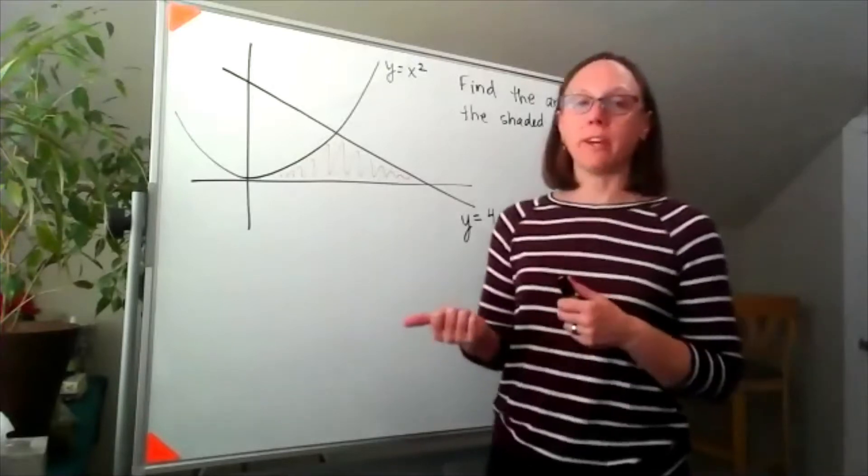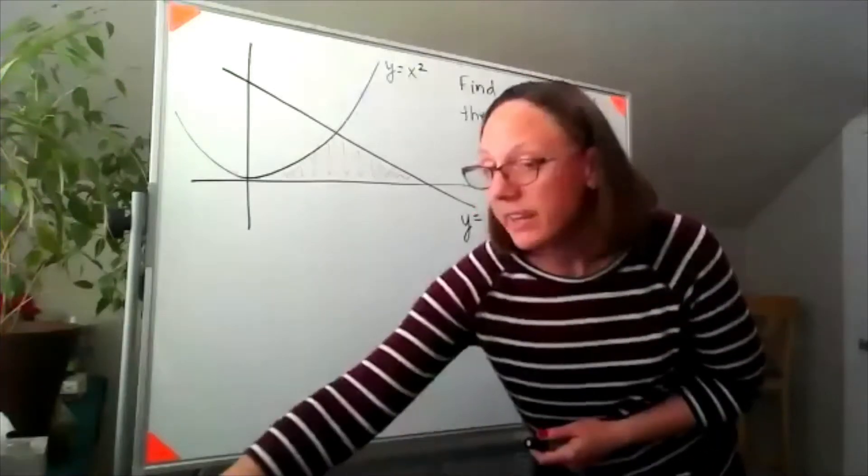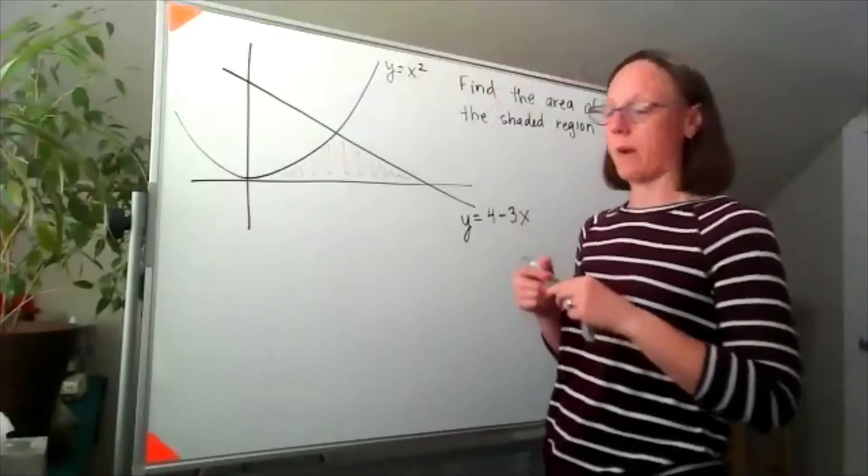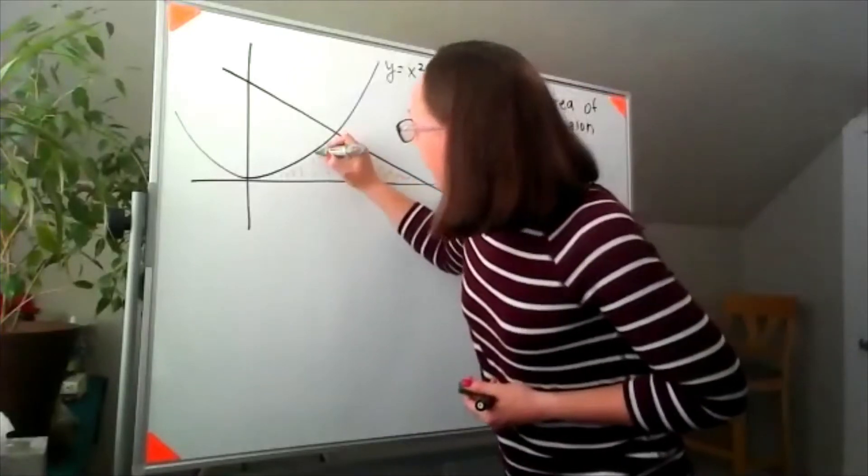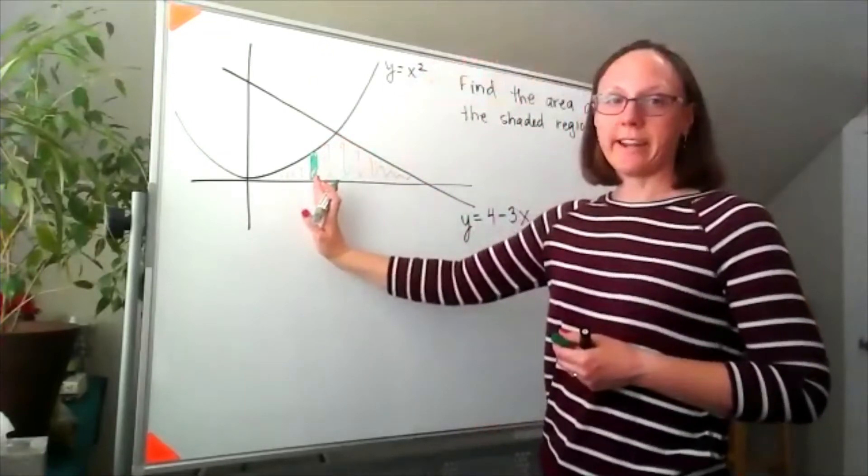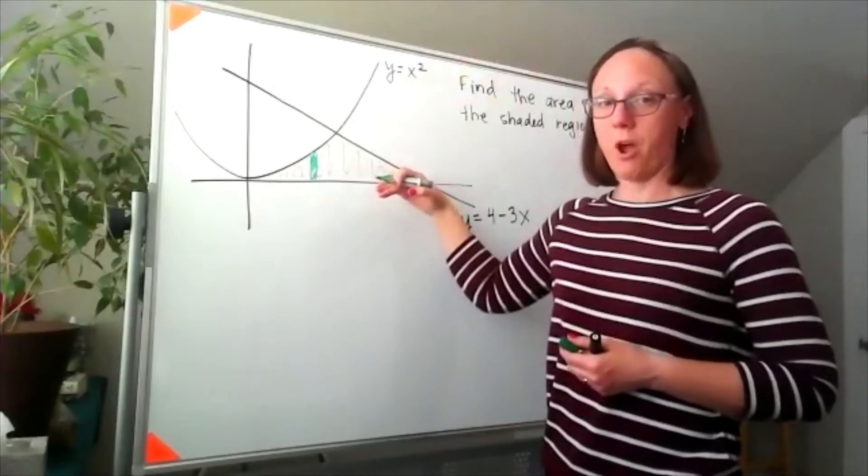The reason that we'd have to write this as two separate integrals, if I were to draw in my arbitrary cross section as a vertical rectangle, my cross sections over here have the parabola as their top function and y equals zero as their bottom function.